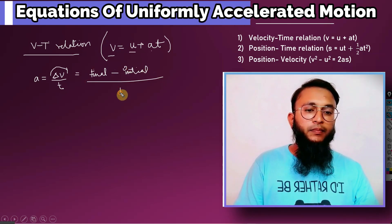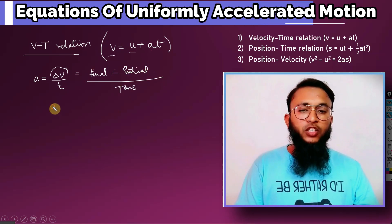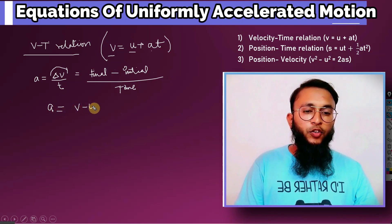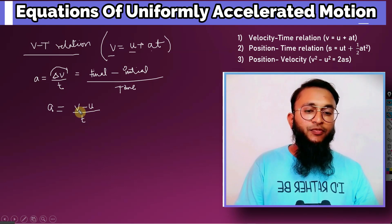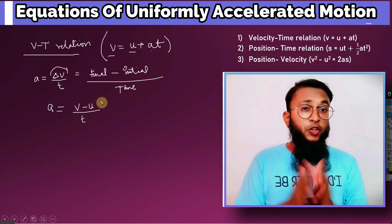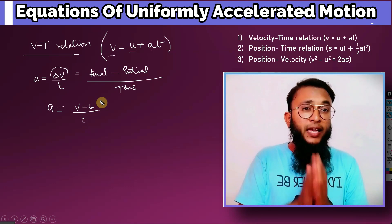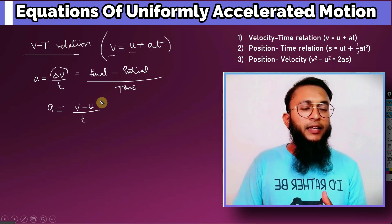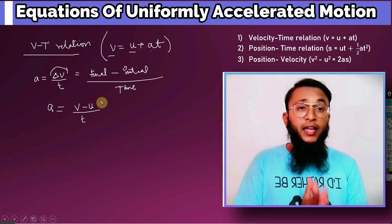Now as we know that the acceleration formula a equals v minus u by t. With the above formula we wrote this that final means v and initial means u. You know I want to give you an easiest hint always to solve any derivation or a theorem of mathematics or physics.